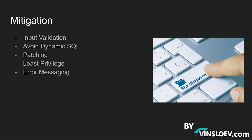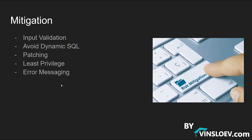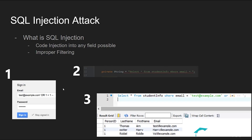The last thing we'll talk about briefly is mitigation. First, input validation — validate the input people are allowed to use; never let users enter raw commands like 'OR 1=1' in an email field. Second, for dynamic SQL, be sure to patch your web server and all plugins so they don't contain SQL vulnerabilities, as we saw with the Google Maps WordPress plugin. Third, always use the least privilege needed in the database — if a user only needs to SELECT data, there's no reason to grant them INSERT or DROP permissions.